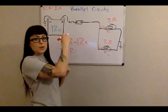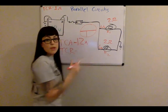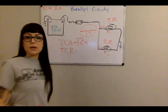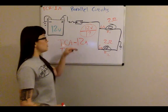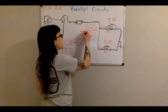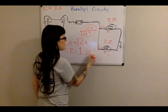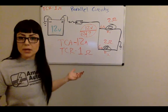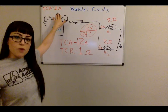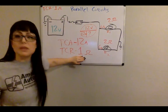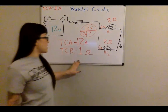Now that I know TCA, Ohm's law says if I know any two values, I can figure out the third. I'm looking for resistance. I know 12 volts source voltage and 12 amps TCA, so 12 divided by 12 gives a TCR of 1 ohm — the same answer we got with the formula. The hand method gives you the same result as long as you have voltage. The reciprocal method will be taught in electrical class.